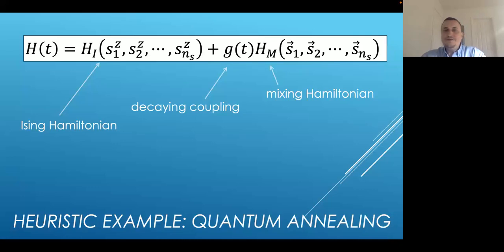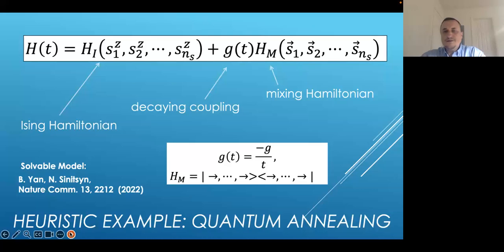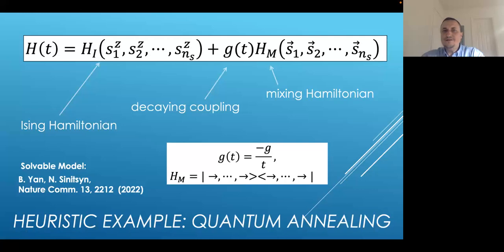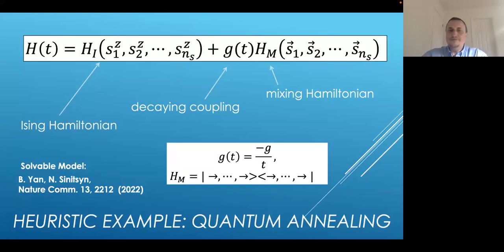The problem is that adiabatic evolution formally needs infinite time, but in reality we compete with classical computers, so we must perform quantum annealing in finite time, which induces non-adiabatic excitations. Those excitations lead to computational mistakes. Recently we were able to say something about this question — we published an article showing this problem is in some sense exactly solvable. We found an annealing protocol for which we can characterize the probability to obtain the ground state and the probability of any number of excitations, exactly and analytically.